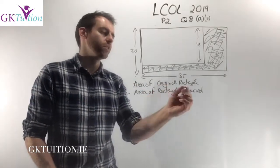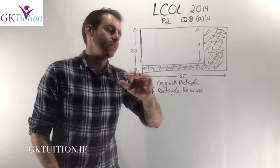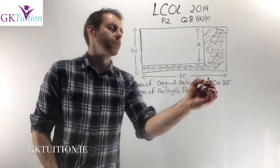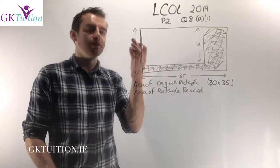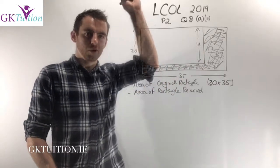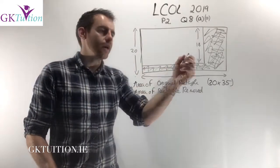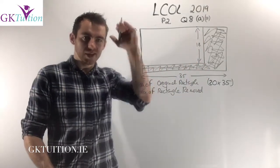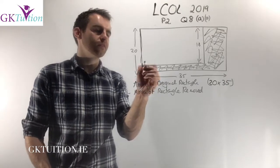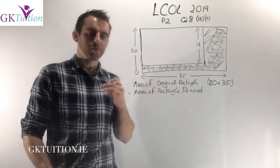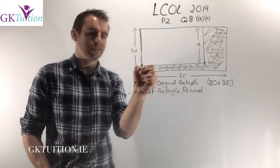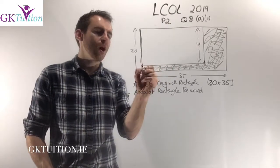The area of the original rectangle is straightforward: length × width = 20 × 35. It's slightly harder to get the area of the rectangle that forms the cylinder. We're told the height of the cylinder is 18 centimeters — think of that as the height of a toilet roll; the height of the tissue equals the height of the cylinder. So one dimension of the cut rectangle is 18. The other dimension — the width — is what we need to find.